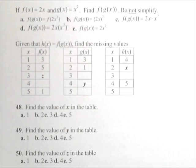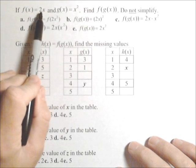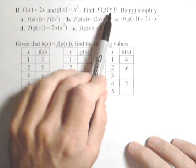In the next few problems, we're going to be dealing with compositions of functions. In the first one, f of x is 2x, g of x is x squared, and we want to find f of g of x.